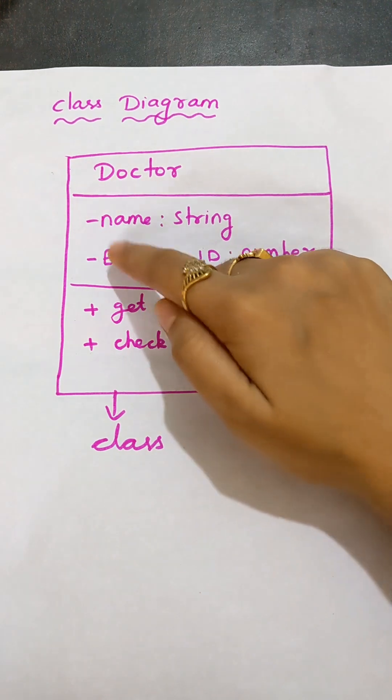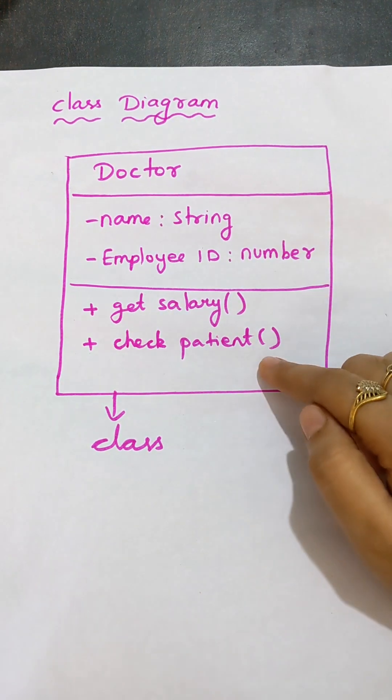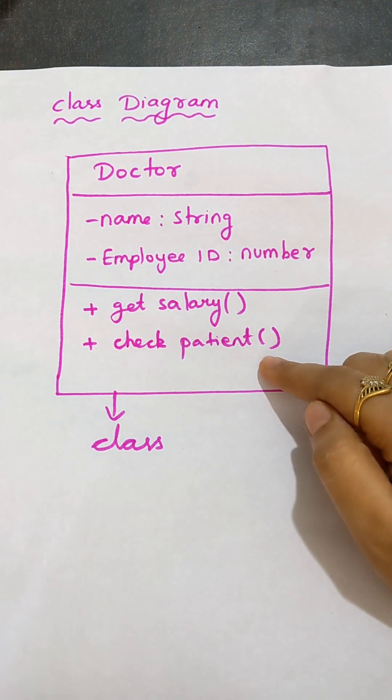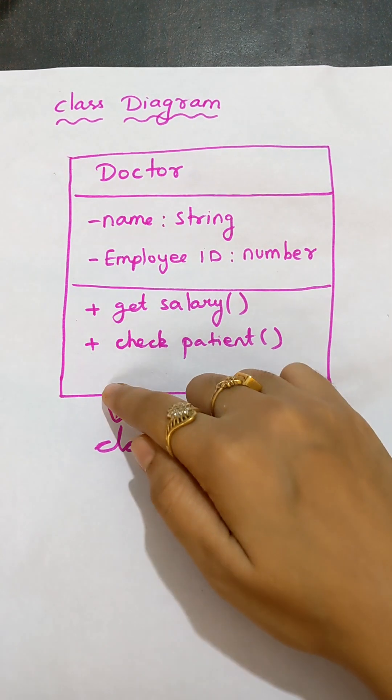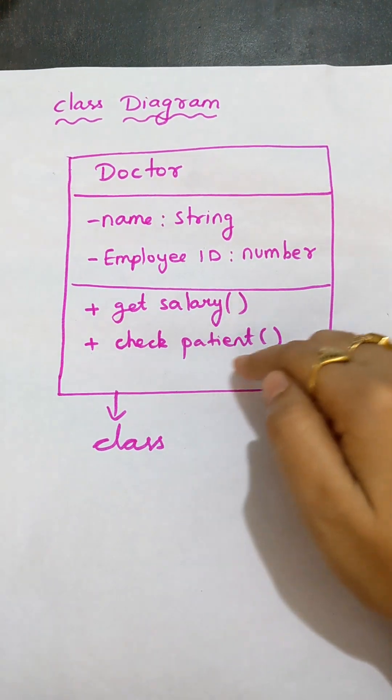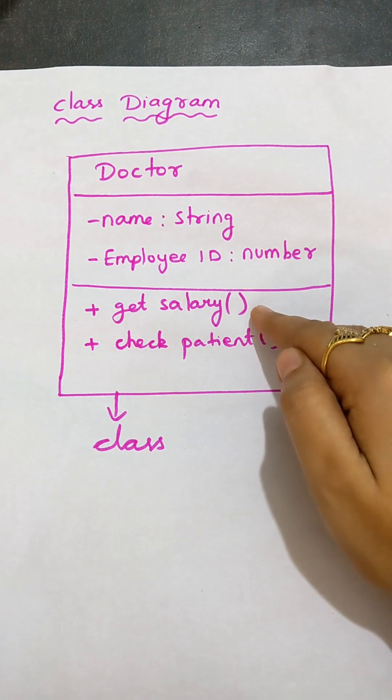I need to put minus before attributes. The third box is for operations that the doctor can perform. I need to put a plus sign before operations like get salary and check patient. The doctor will check the patient and get salary every month.